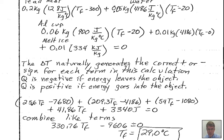We can say this is reasonable because 29 degrees Celsius is between the starting temperature of 20 degrees Celsius and the lead's temperature of 300 degrees Celsius. You might think it's a little low, but consider the energy involved in melting the ice — 3,340 joules came out of the lead, which is a substantial amount, so we don't reach as high a temperature as you might expect.